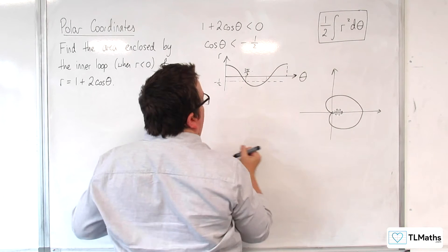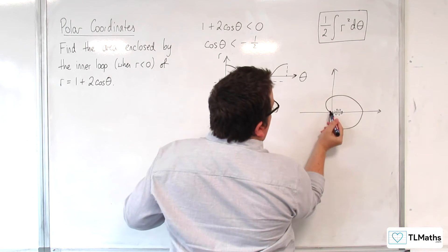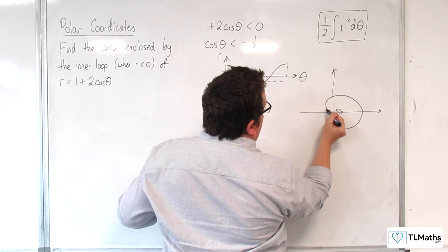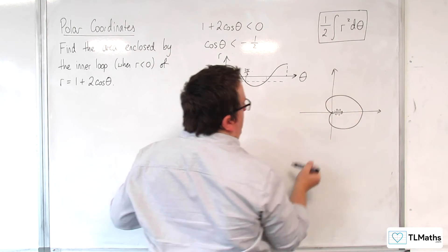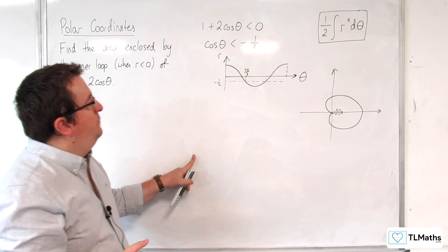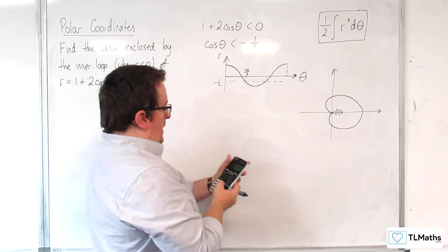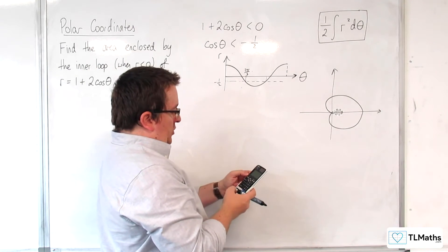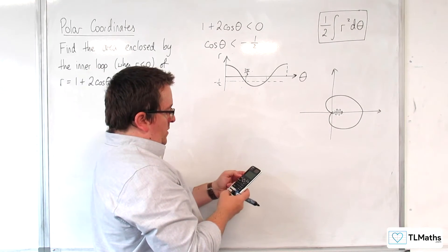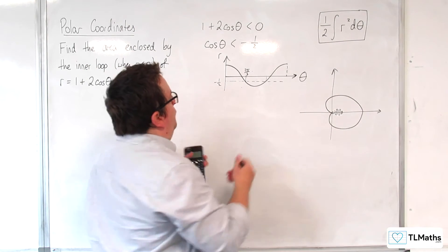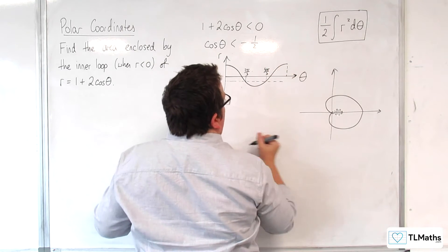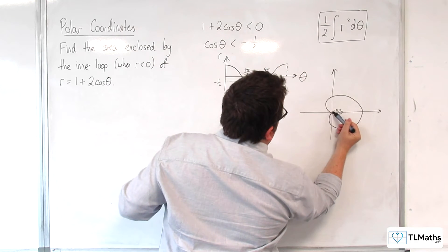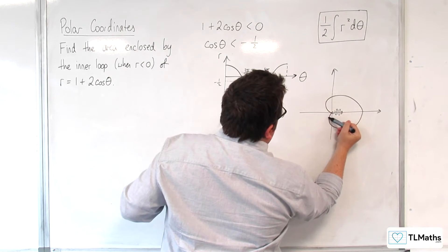That's that value there — coming in at a tangent, making an angle of 2π/3 from the initial line. And then 2π take away that is 4π/3, and that's the angle it's making as it comes out.